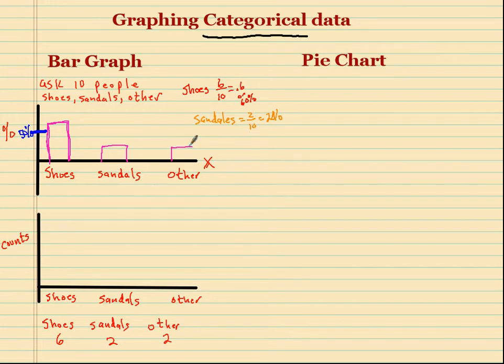And the other would also be the same thing, because other also had 2 out of 10. Okay, and the next one's a little more obvious. This is counts. So we could put our count as 5, 6.